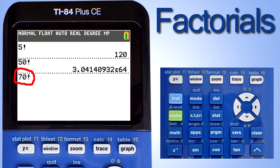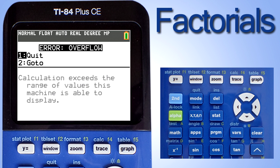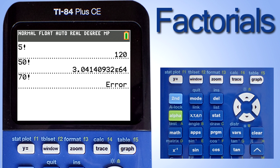For example, say we want to calculate 70 factorial. And we get the message, error, overflow. 70 factorial is too large of a number for this calculator.